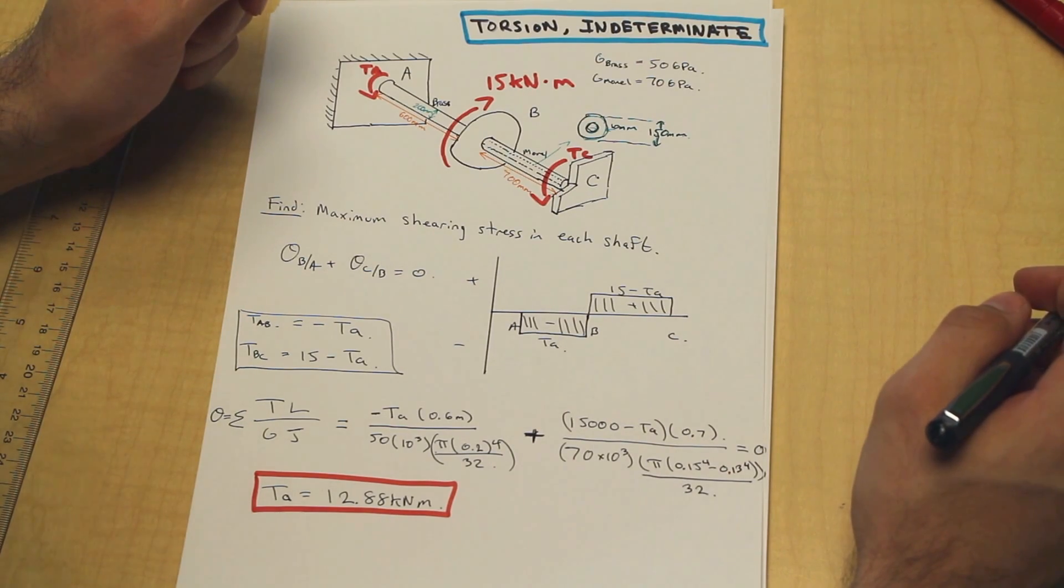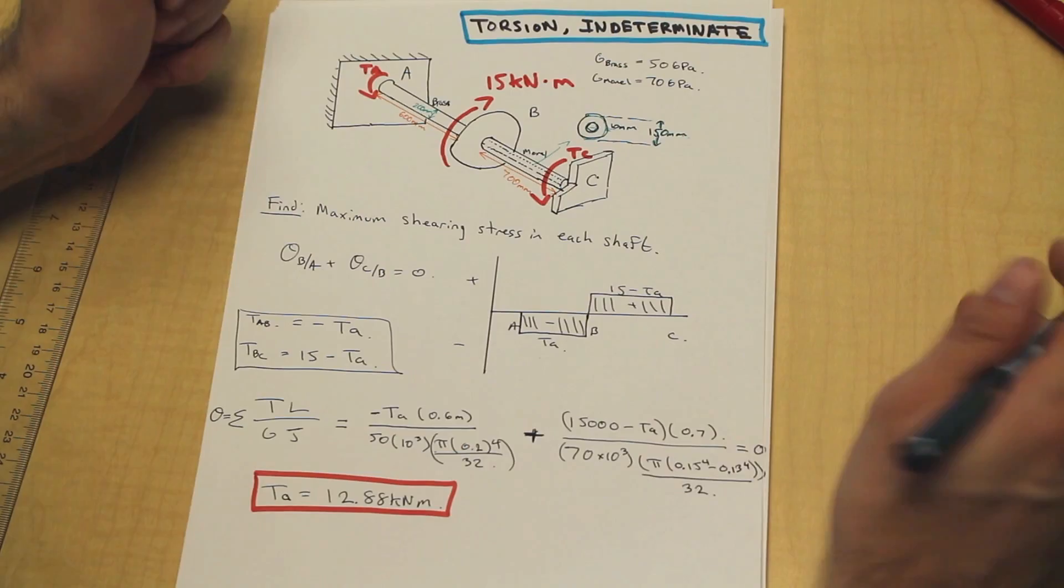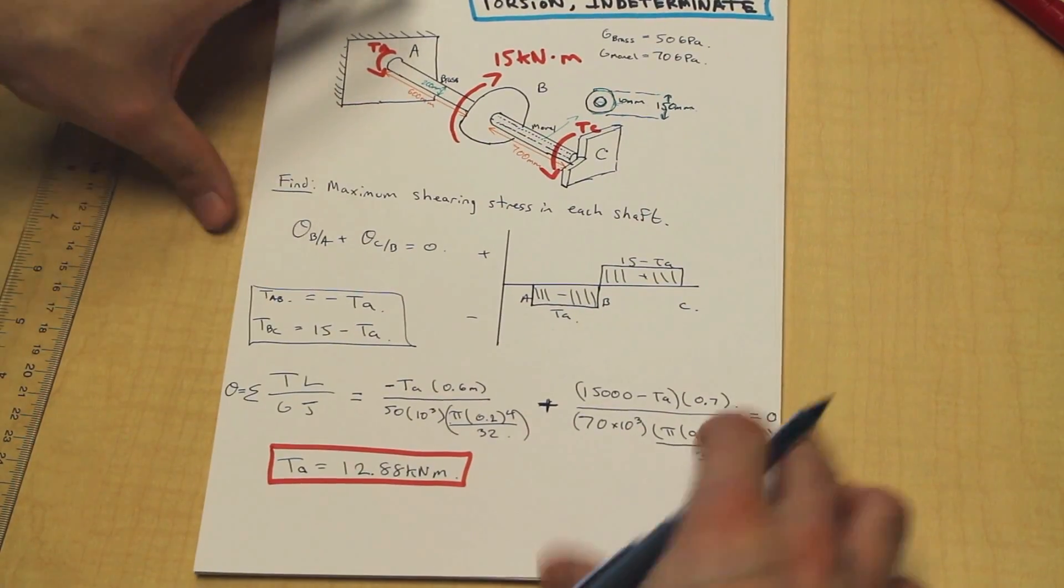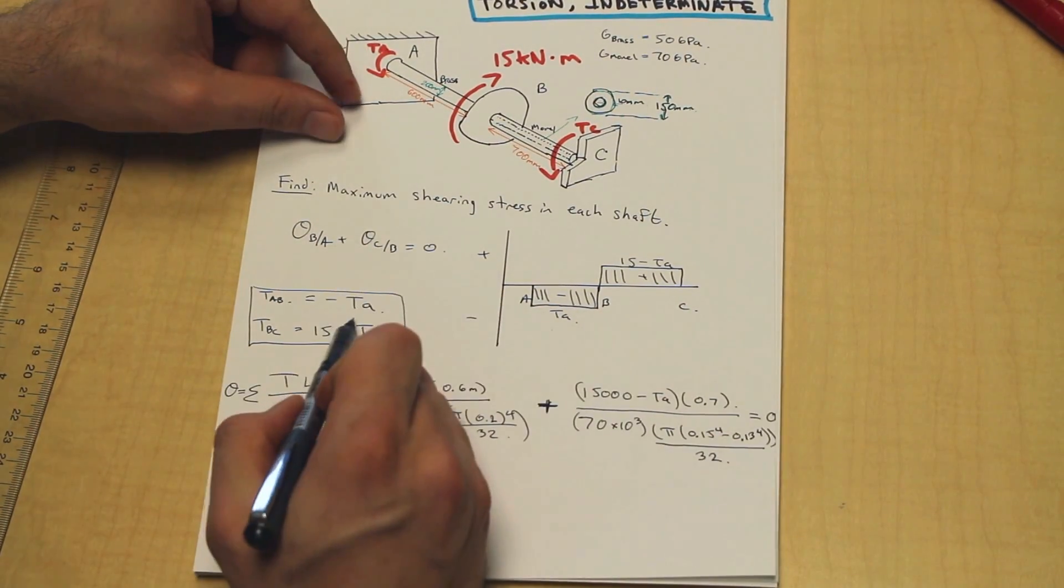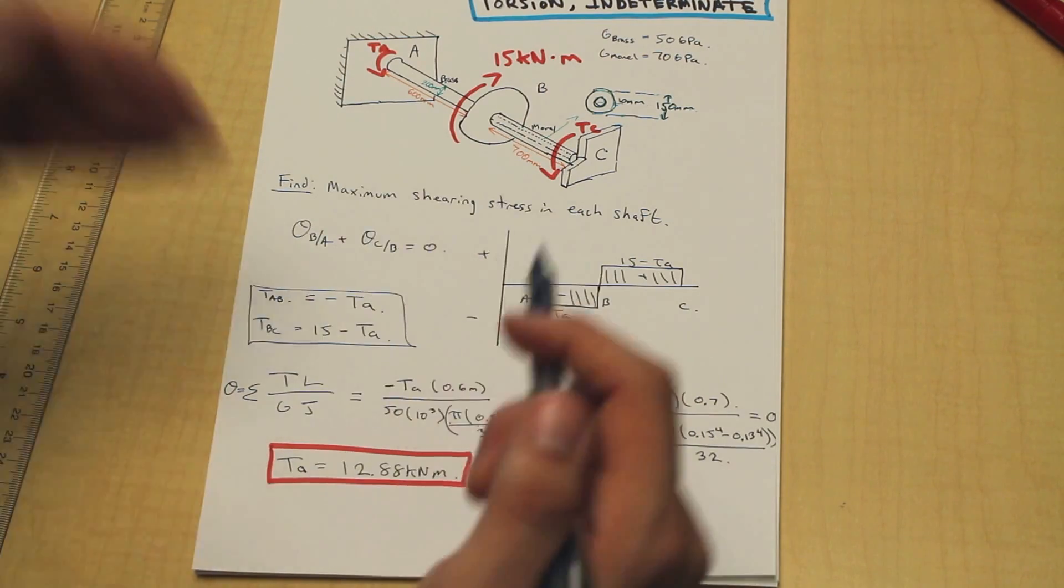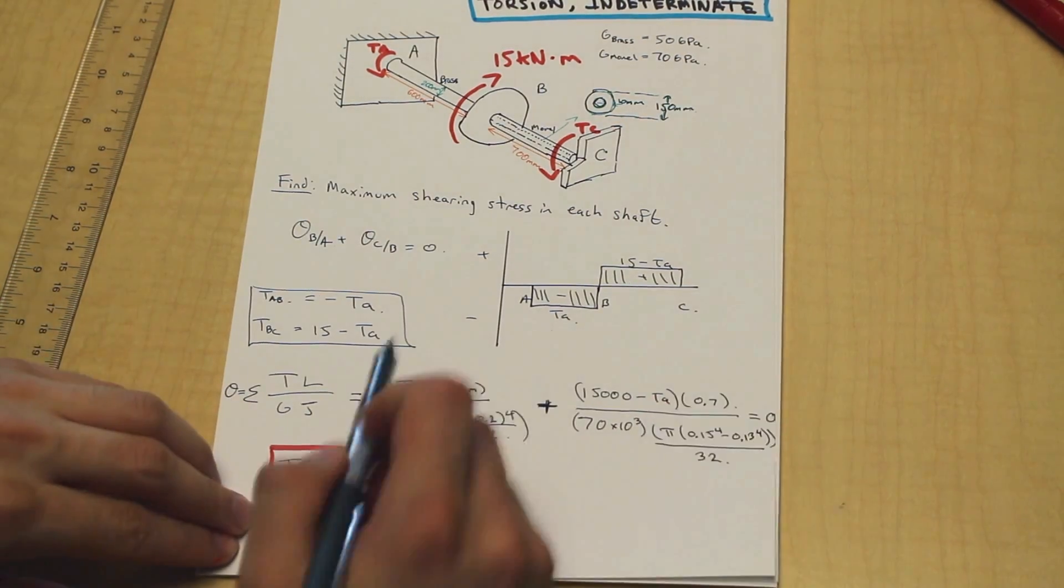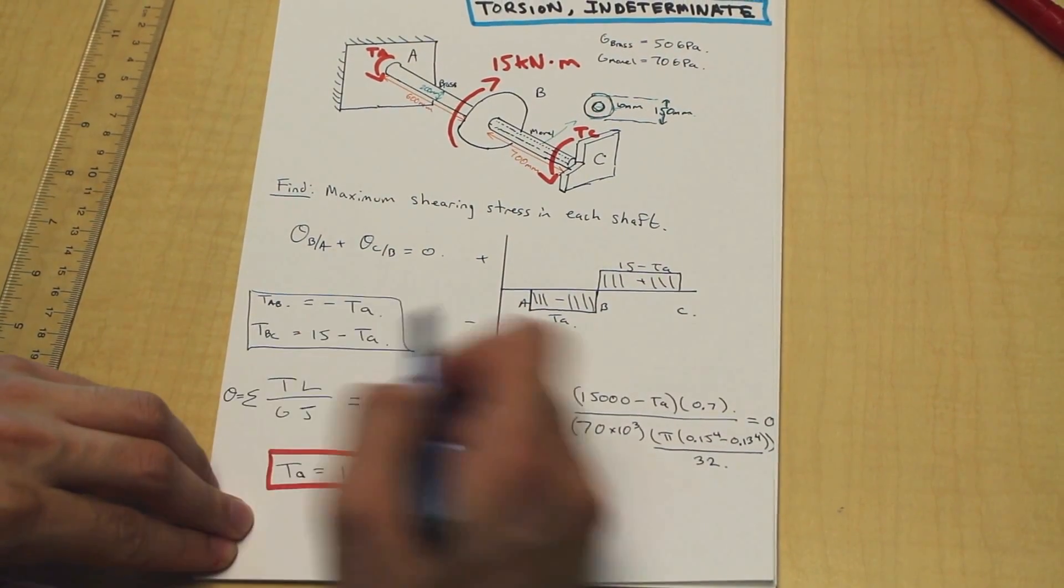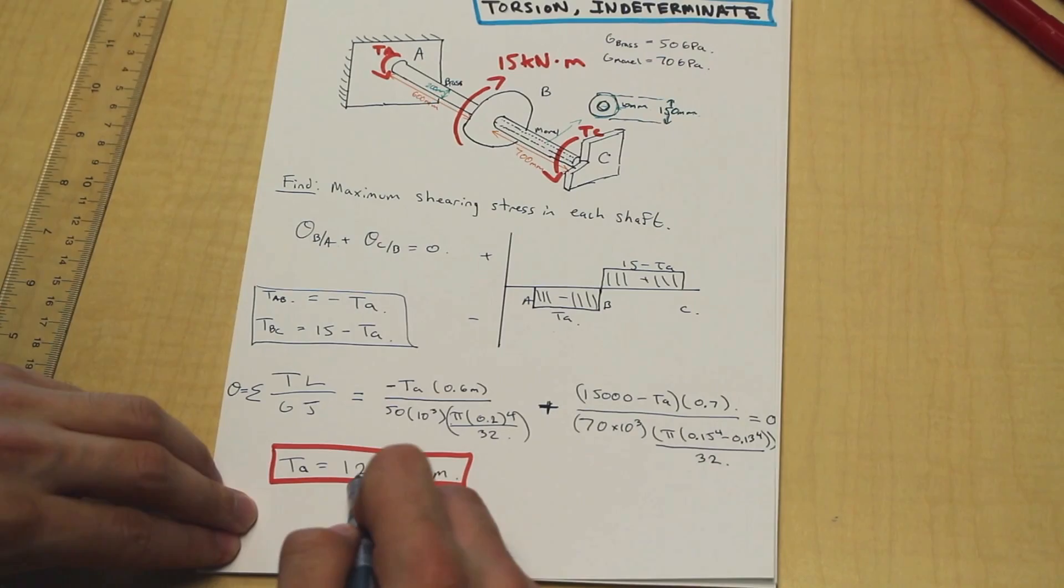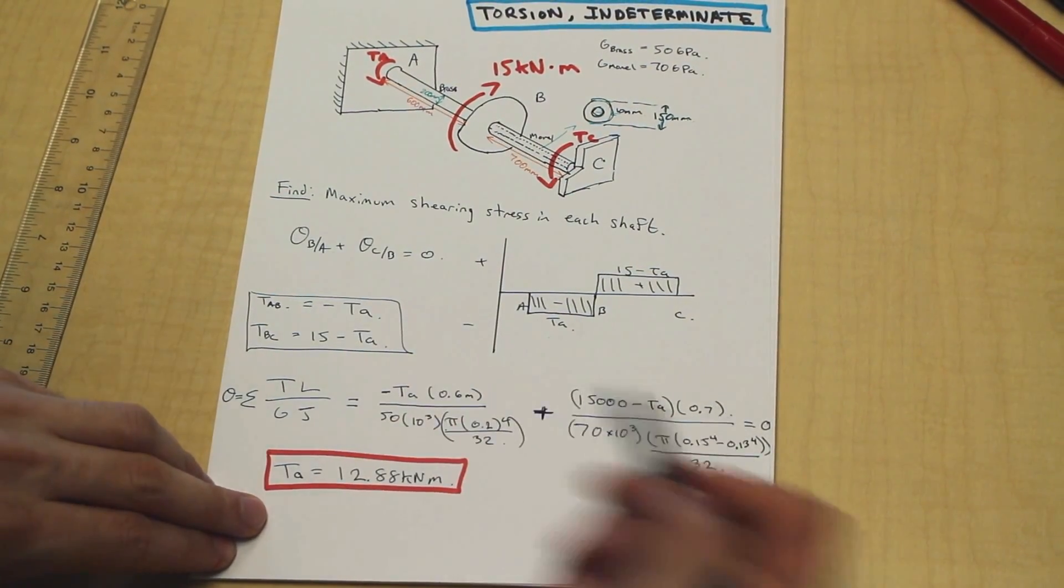So now that we have TA, what do we do? Well, that's a good question. What we need to do now is we have to go back to this equation because this isn't done yet. We need to solve for TAB, we need to solve for TBC. That's what we need to do. So we can plug it back into our system of equations here, and we can solve for TAB and we can solve for TBC because we have TA now. So let's do that.